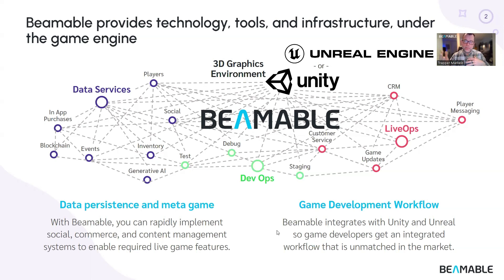If you're developing in Unity or Unreal and you're building a live game, you're going to need a series of tools, technologies, and managed infrastructure to be able to rapidly implement features for your title. This could include data services features like player state, world state, inventory systems, metagame systems.